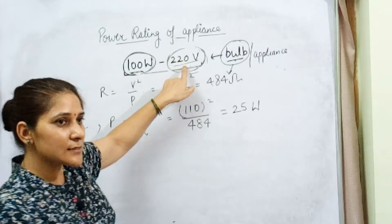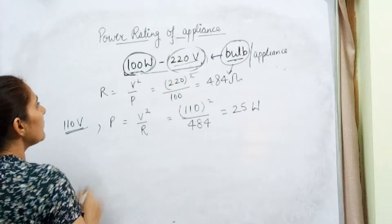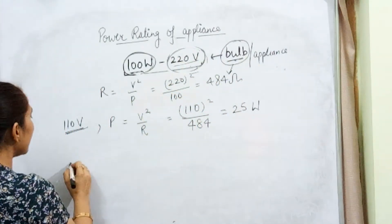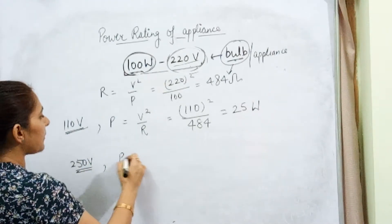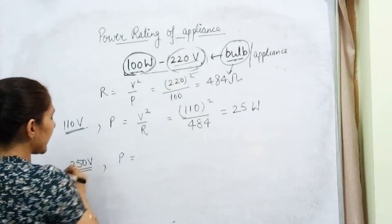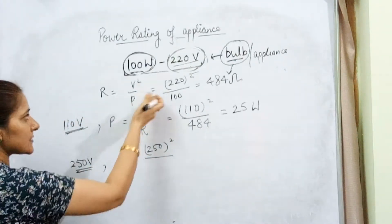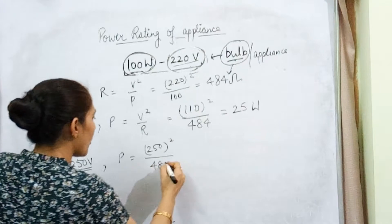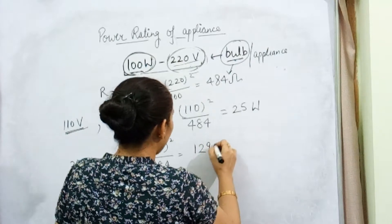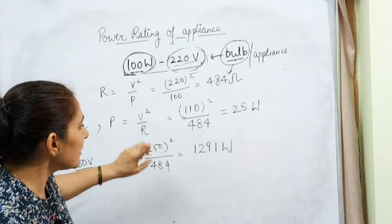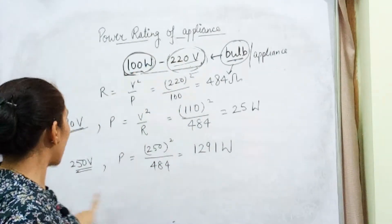Earlier when this bulb worked at 220 volt it consumed 100 watt, but now at 110 volt it consumes 25 watt. This confirms what I said: if the potential difference decreases, the power consumed by the appliance decreases. Now the second situation: the bulb is working at 250 volt. What will be the power? P = 250² / 484 (same resistance, same bulb). When you calculate it, you get 129.1 watt.